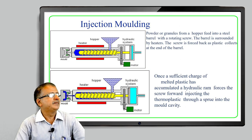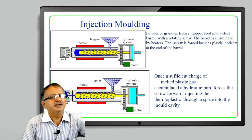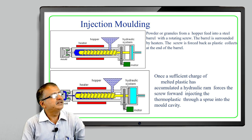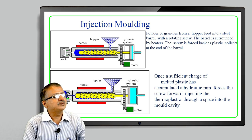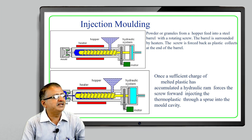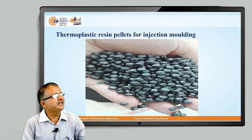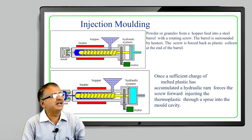The same process is shown in the diagram. A hopper is shown into which the powder or granules are fed into a steel barrel. The barrel has a rotating screw and is surrounded by a heater. The screw is forced back as plastic collects at the end of the barrel. In the second diagram, once a sufficient charge of melted plastic has accumulated, a hydraulic ram forces the screw forward and injects the thermoplastic through a sprue into the mold cavity. Thermoplastic resin pallets in the form of powders or granules are fed to the hopper.